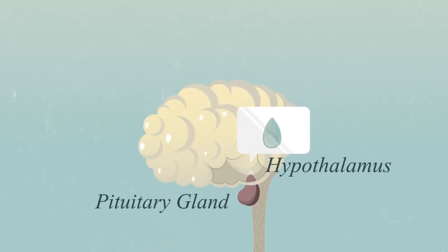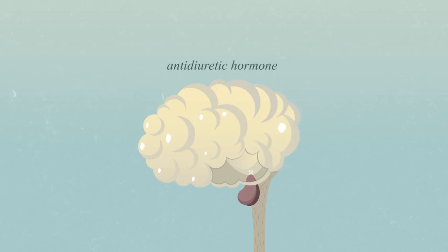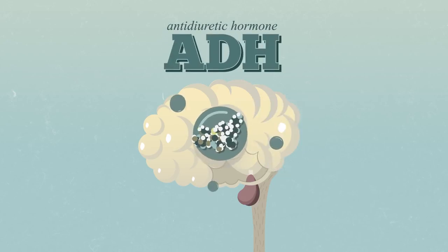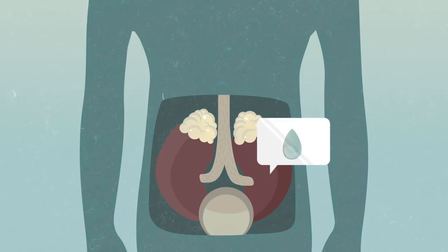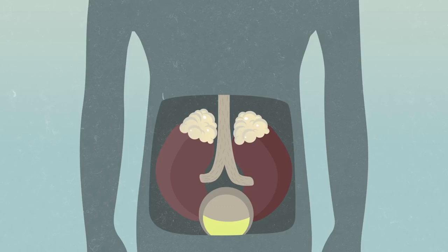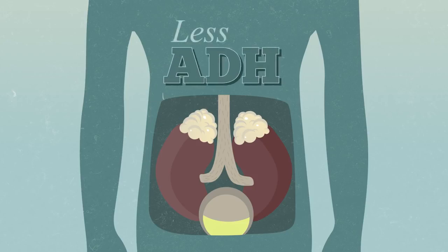Feeling thirsty? When the hypothalamus detects low levels of water in blood, it signals the pituitary gland to release a hormone called the antidiuretic hormone, or ADH, into your bloodstream. ADH travels to your kidneys — in this case the target organ — and causes water to be absorbed, so urine becomes more concentrated and output is decreased. Drinking more water increases the water content in your blood, which then causes the hypothalamus to signal the pituitary gland to secrete less ADH.